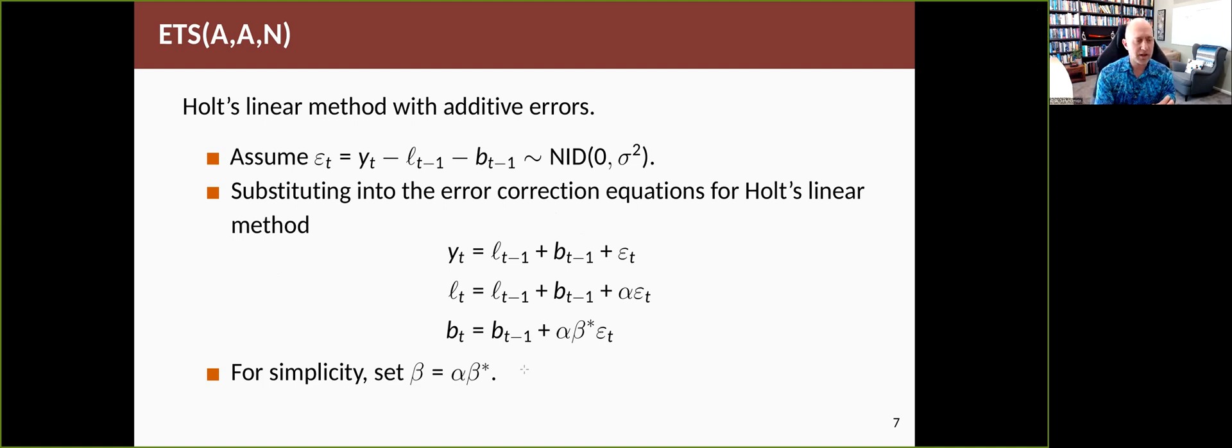We can do the same sort of rewriting of the models for any of the ones that we've looked at, the Holt linear trend or the damped trend or the Holt-Winters methods. So if we take the Holt linear method with additive errors, we're assuming that the difference between what we saw and what we predicted we would see would be normal, independent, homoscedastic. And we plug that into the error correction form of the equations and we get this set of equations here. So notice that it's the same epsilon in all three lines, but with a different multiplier, and the multiplier for the last set for the slope is alpha times beta star. Now, to make the writing down of these a little simpler, we're going to re-express that as beta. So we're going to use beta instead of alpha times beta star.